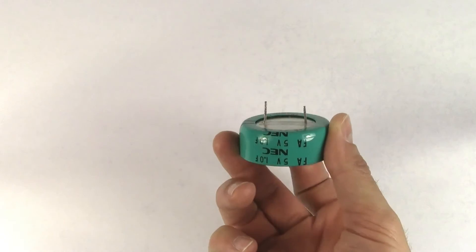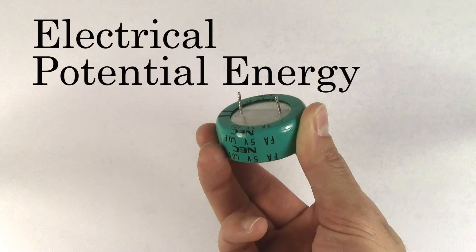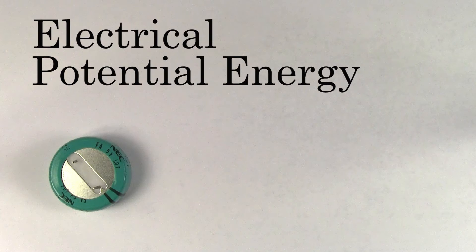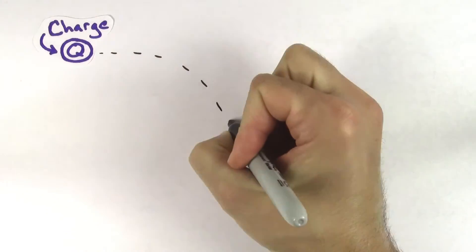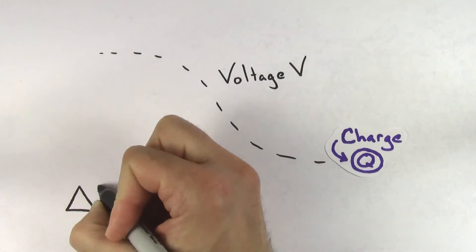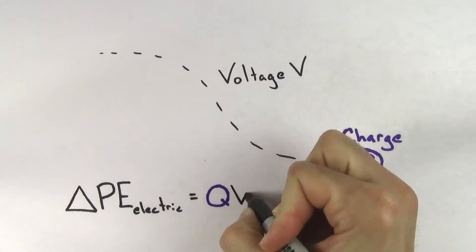The type of energy that's stored in capacitors is electrical potential energy. So if we want to figure out how much energy is stored in a capacitor, we need to remind ourselves what the formula is for electrical potential energy. If a charge Q moves through a voltage V, the change in electrical potential energy of that charge is just Q times V.